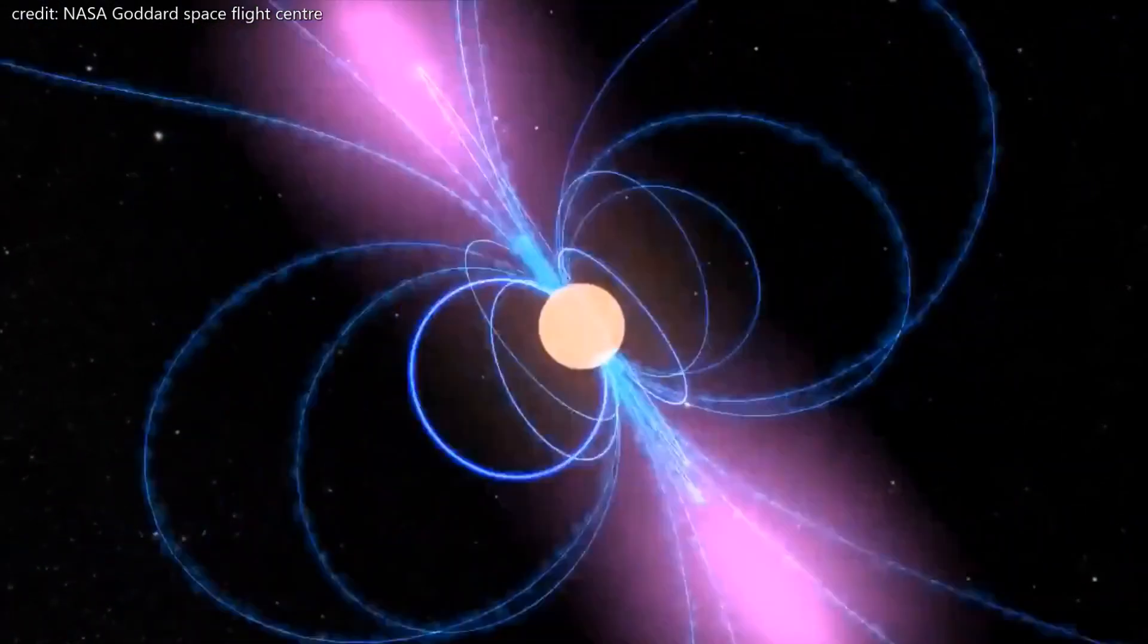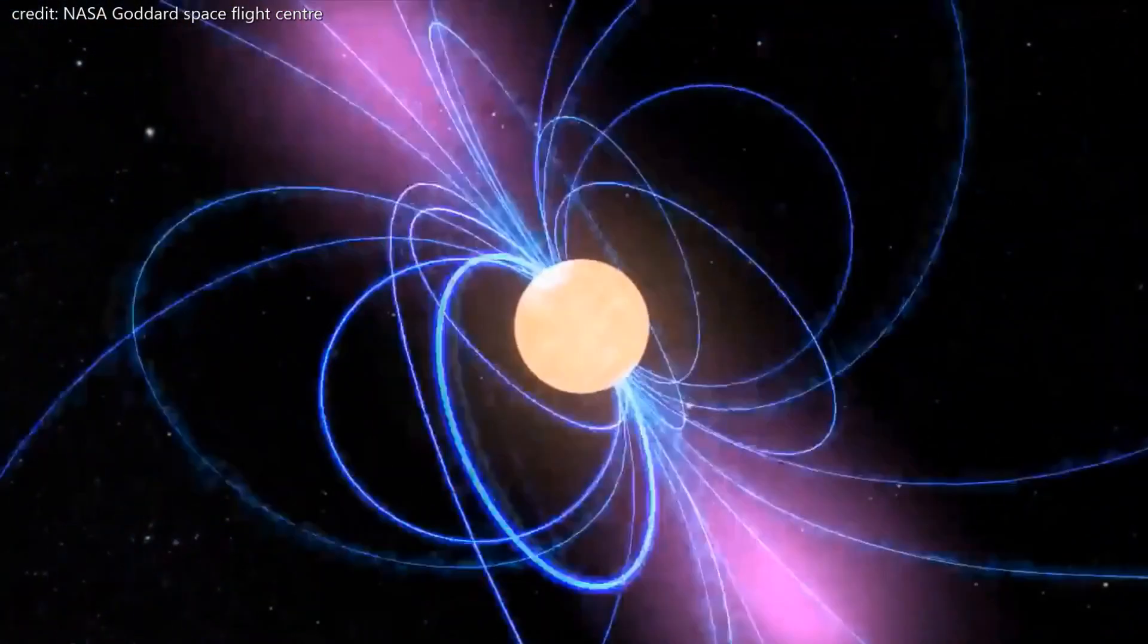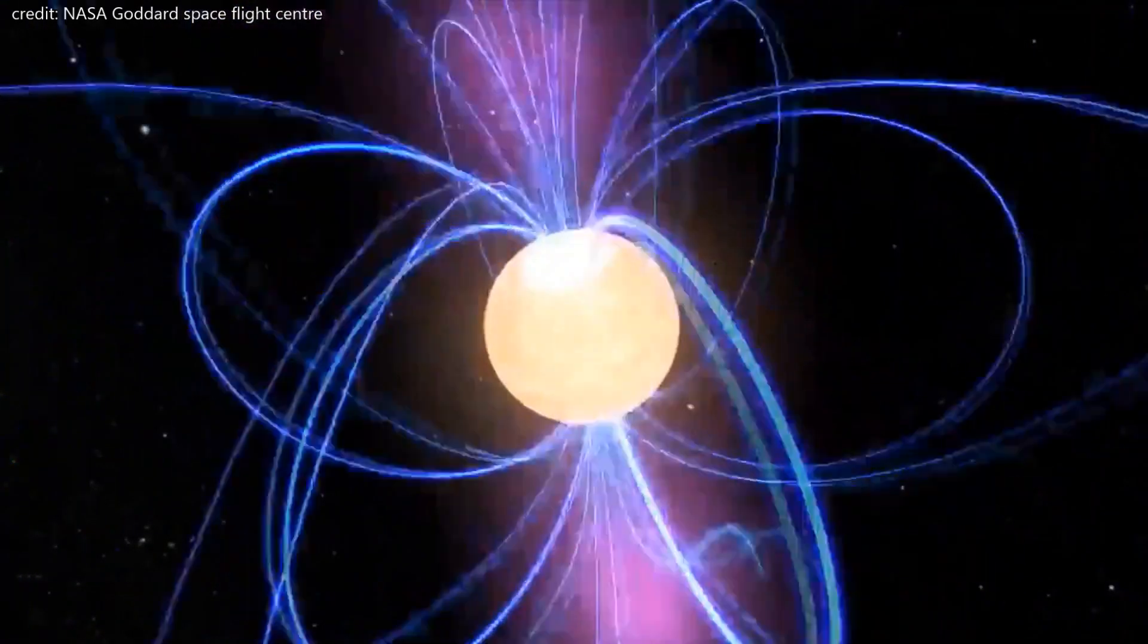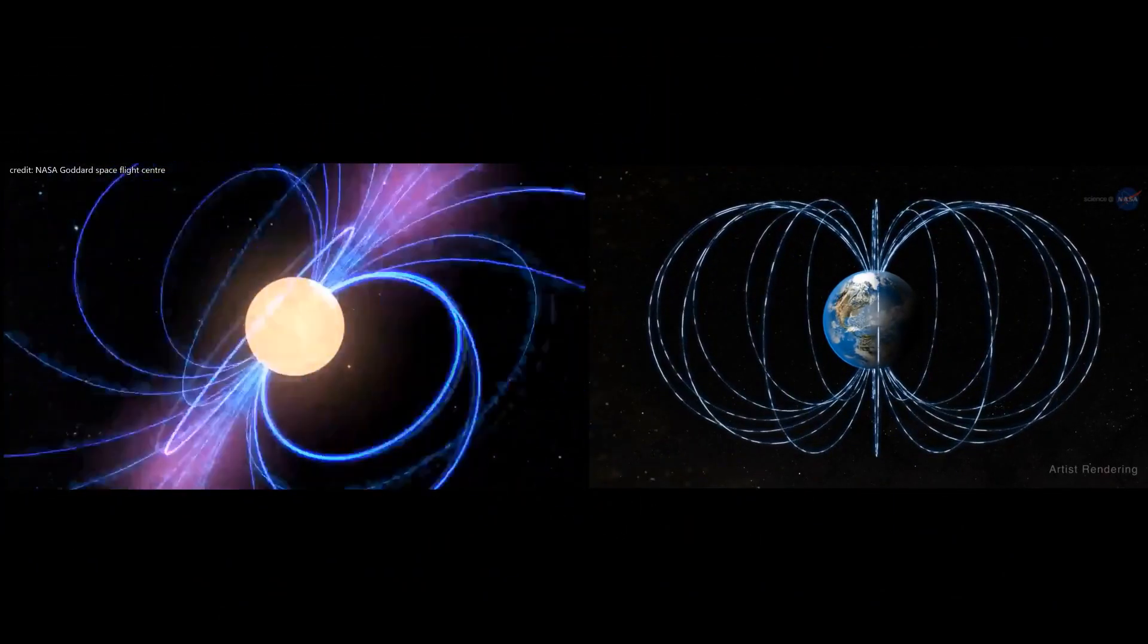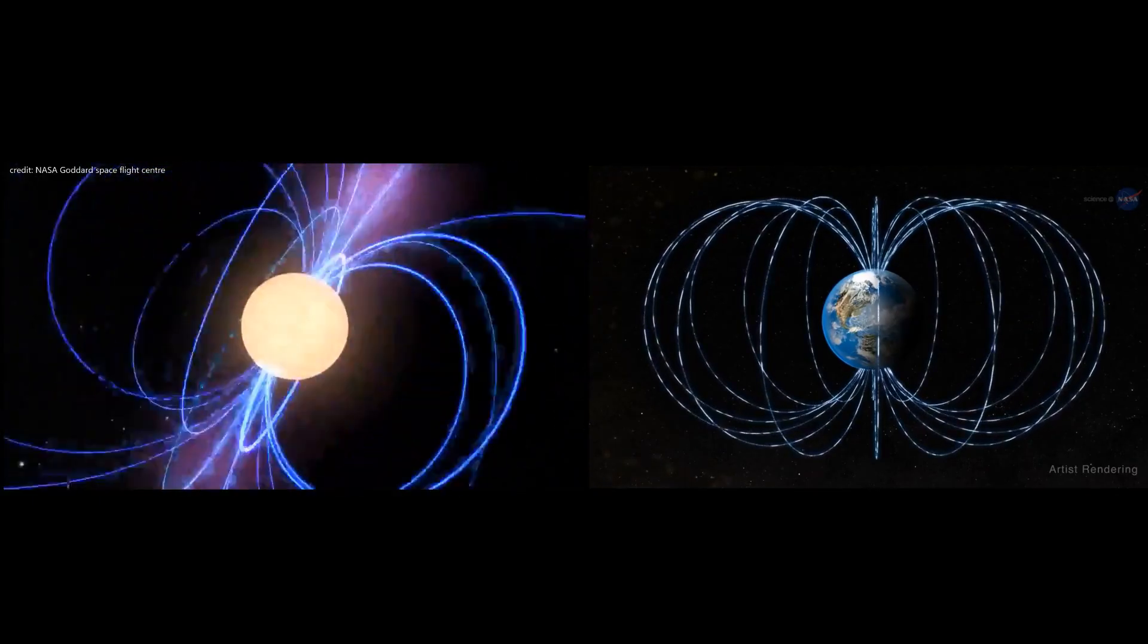Magnetars are the giant magnets of the universe. The magnetic field they create can be up to 1 quadrillion gauss, that's 1000 trillion times stronger than the magnetic field we experience here on earth.